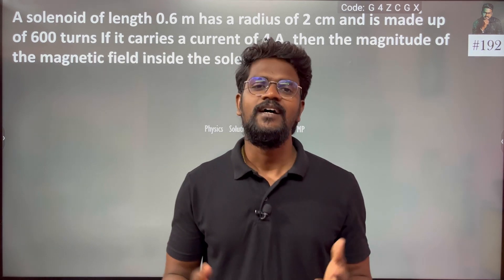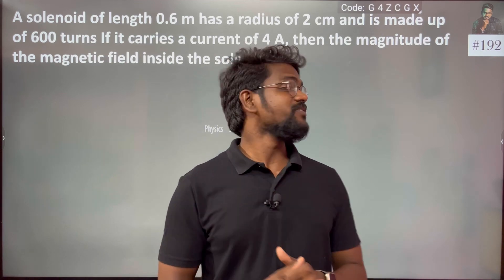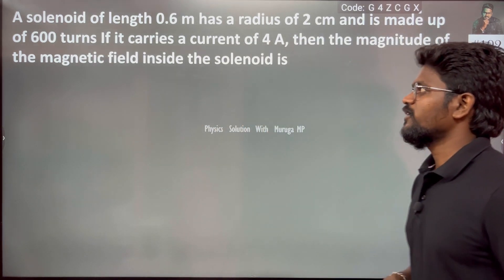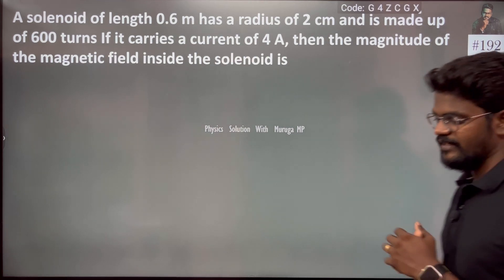Hi everyone, question number 192. A solenoid of length 0.6 m has a radius of 2 cm and is made up of 600 turns. If it carries a current of 4 A, then the magnitude of the magnetic field inside the solenoid is...